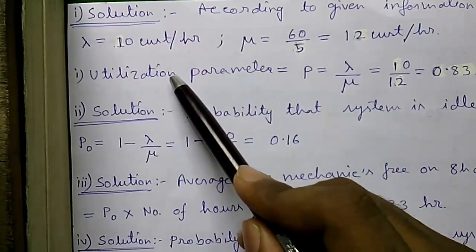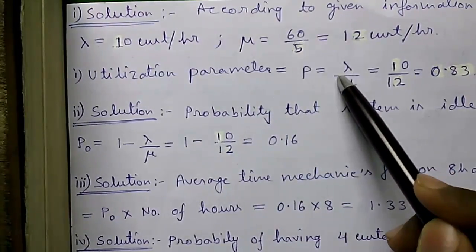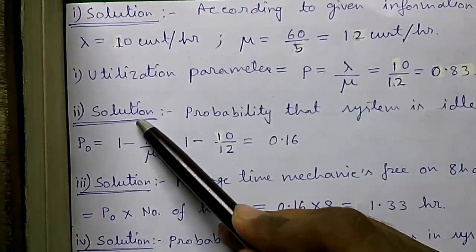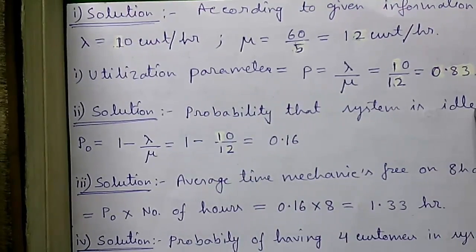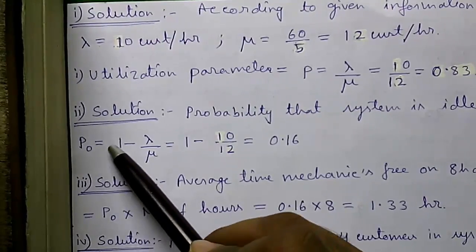And mu or average rate of service of customers is 60 by 5 or 12 customers per hour. So solution of question number one: utilization parameter or rho is given by lambda by mu which is 10 by 12 or 0.83.